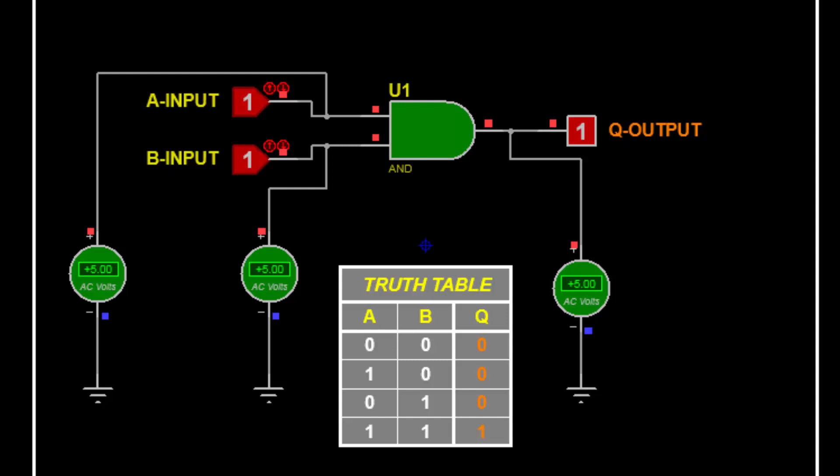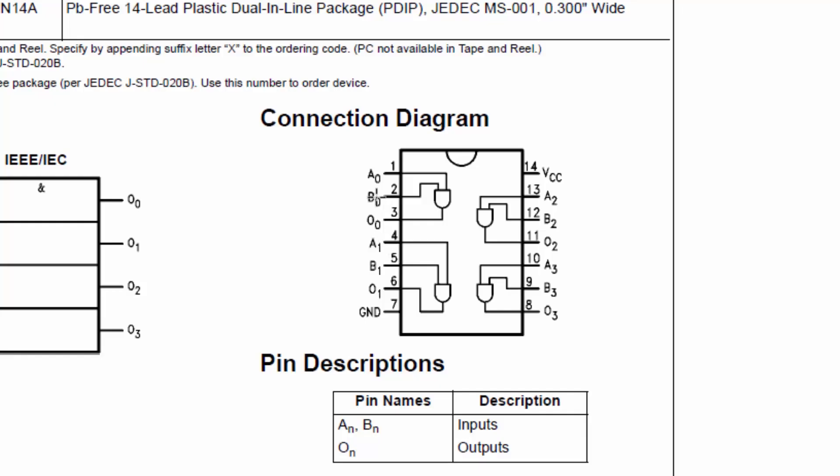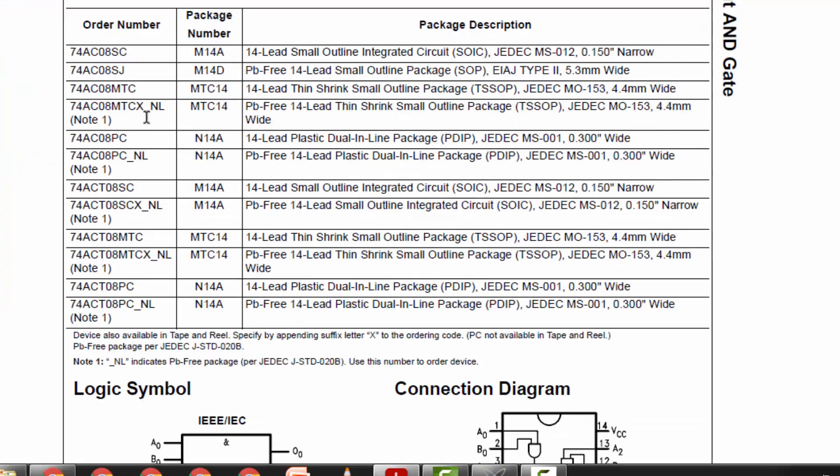The output is logic 0 for all other cases. Just only we have one condition at that time the output will be high, that is both inputs should be high. We discussed only one section.